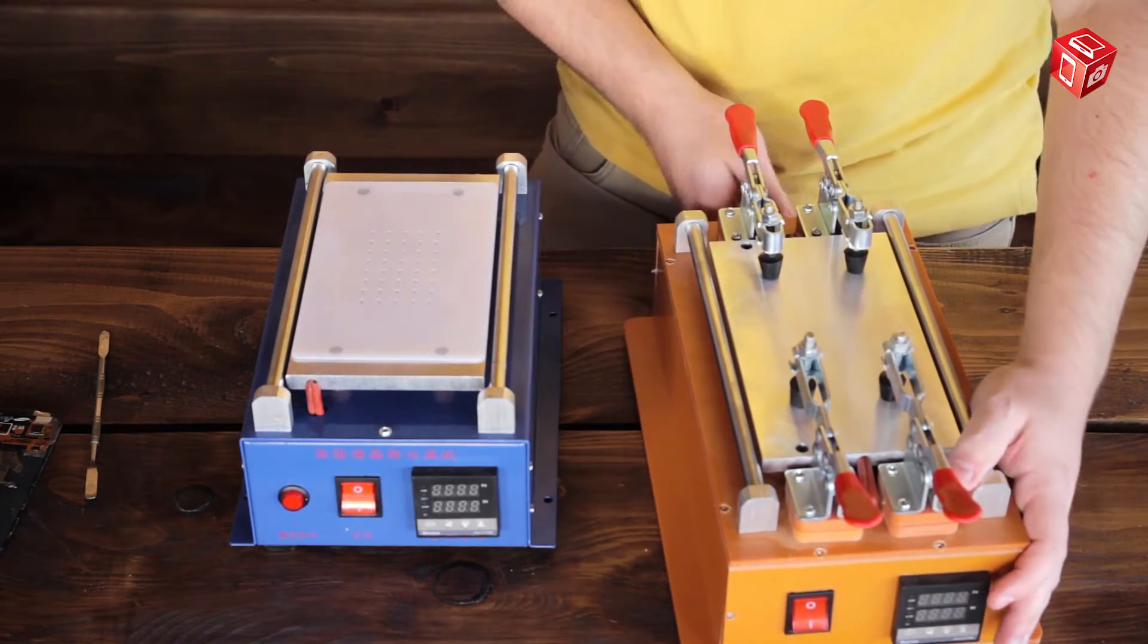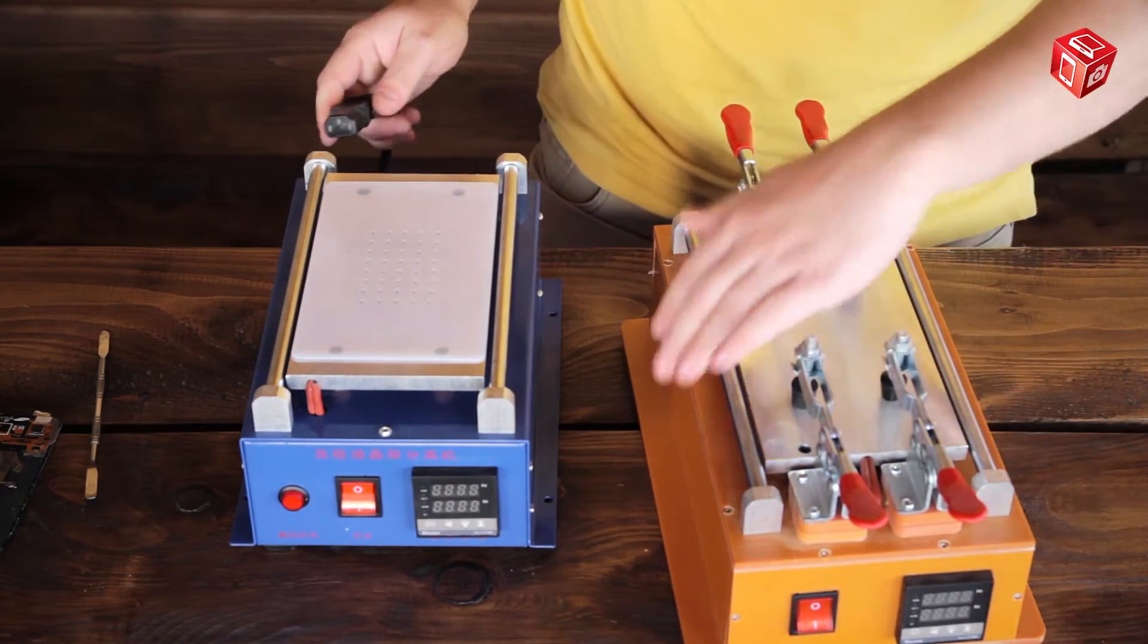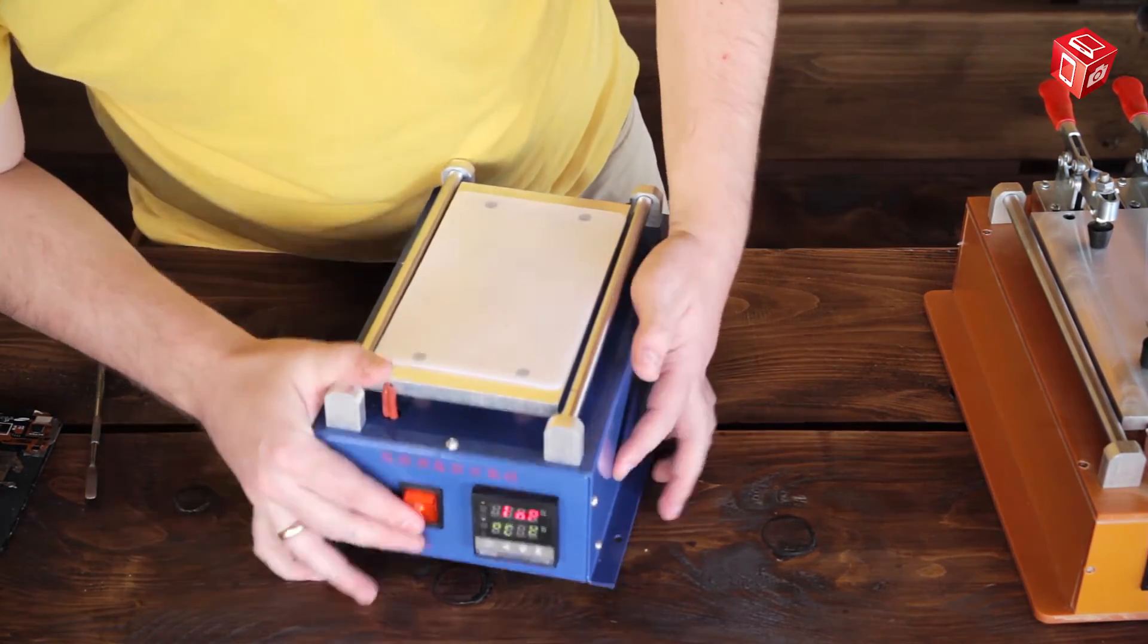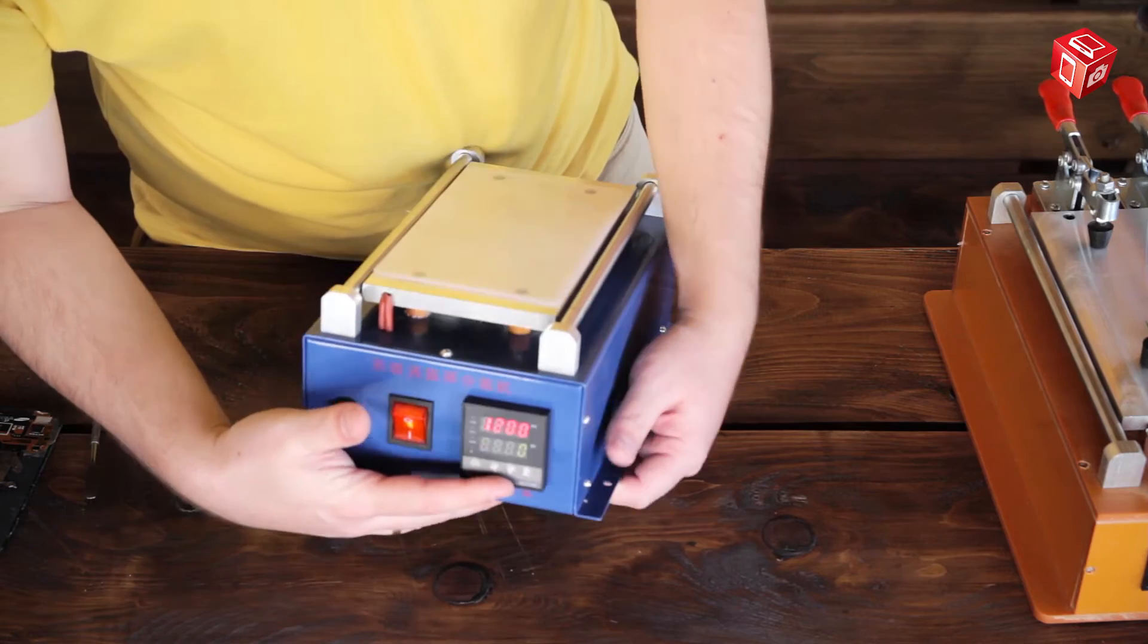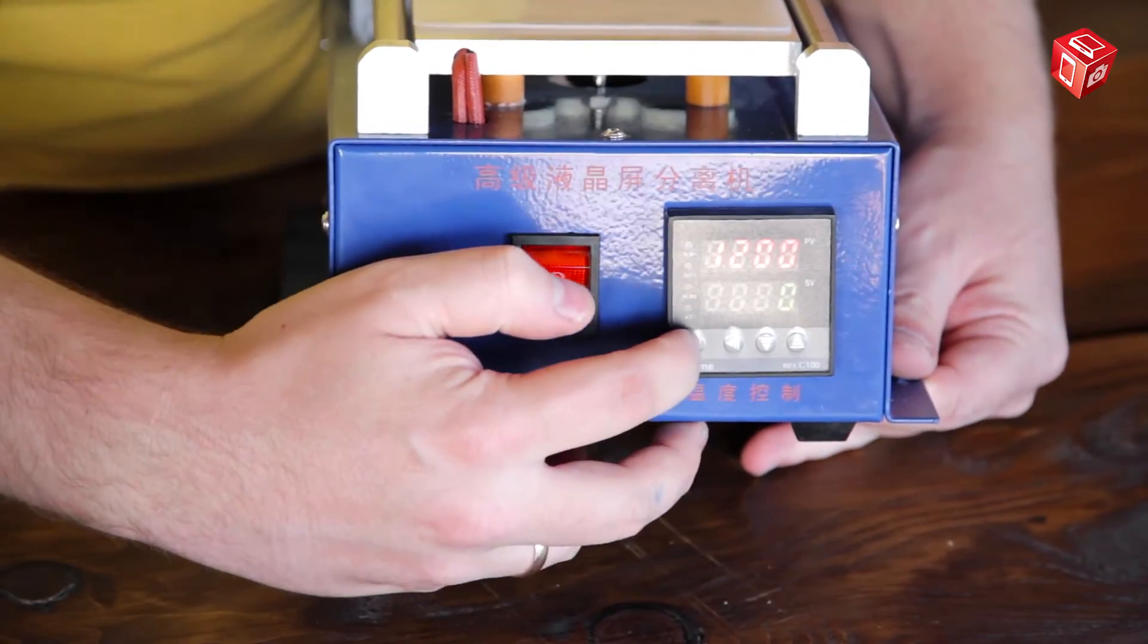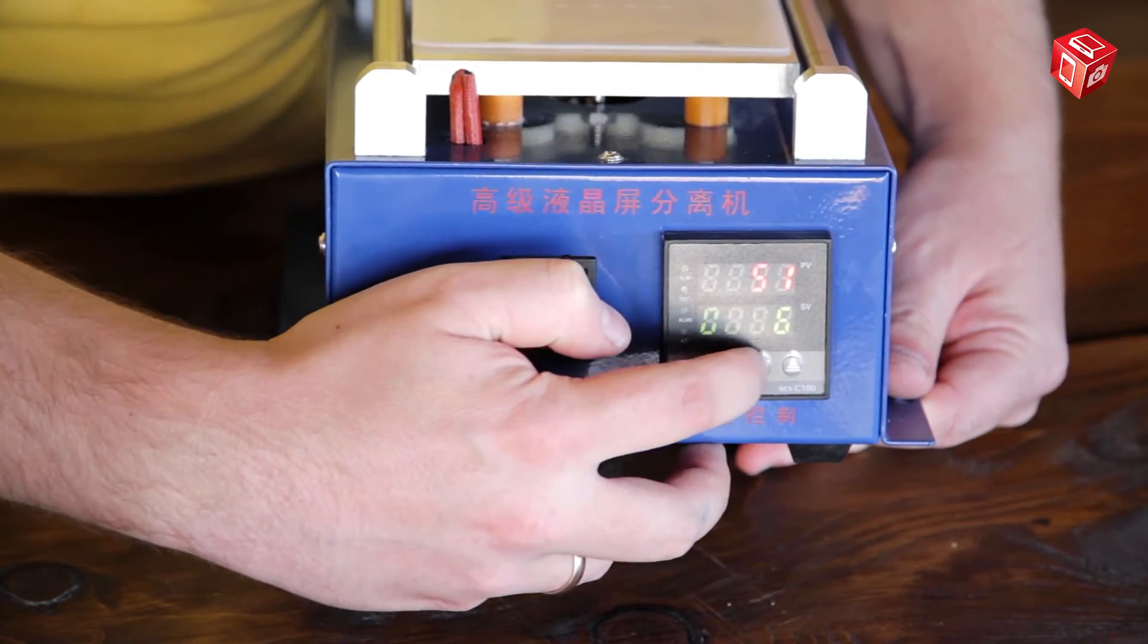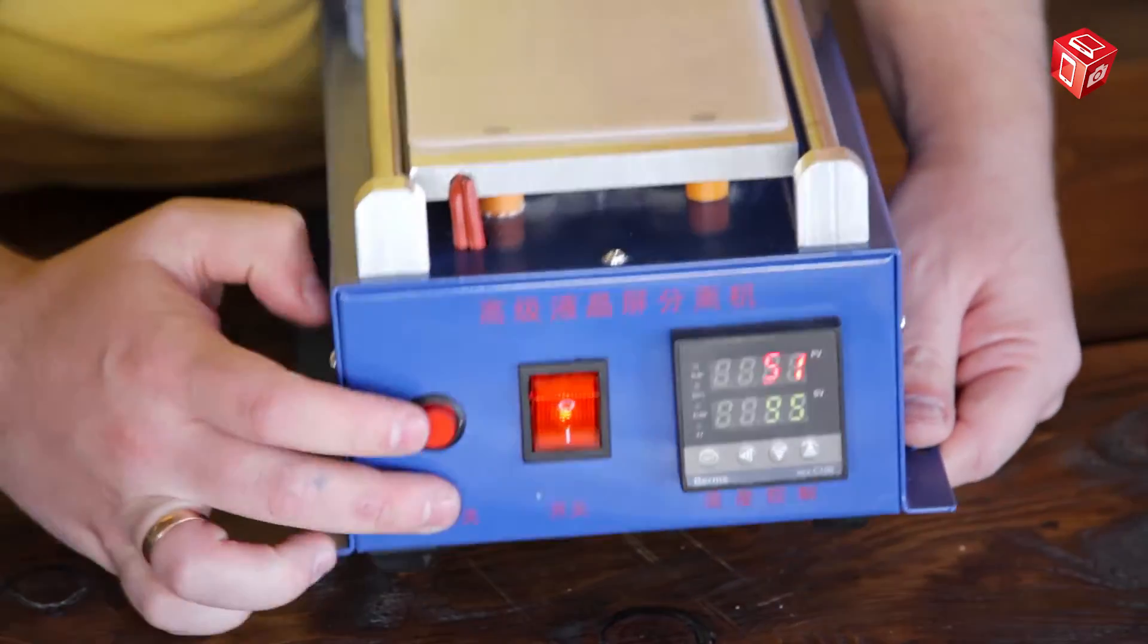Let's move on to the TBK988 model review. There is a power button and a temperature control panel on the front panel of the device. It is identical to the panel of SM252 model. Required temperature is set using a set button and up and down buttons.